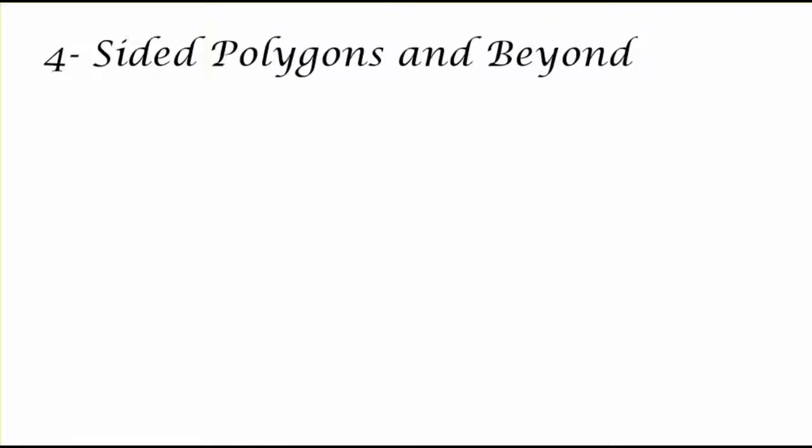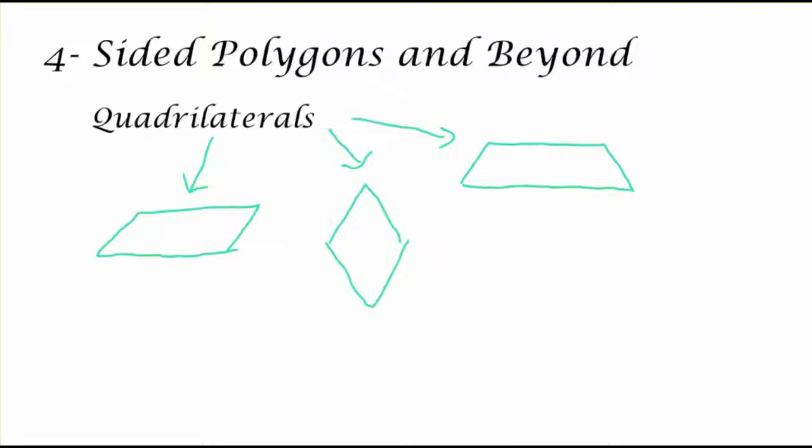Now beyond triangles, we also have a slew of four-sided polygons. And from that we can talk about a whole bunch of others. But quadrilaterals are the four-sided polygons with four angles and four sides. Now these quadrilaterals are largely based off of their characteristics.